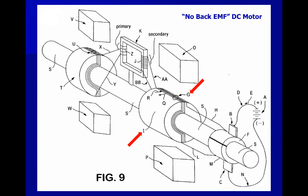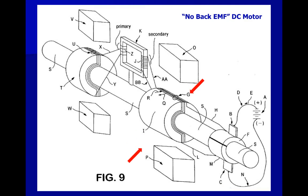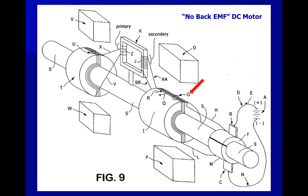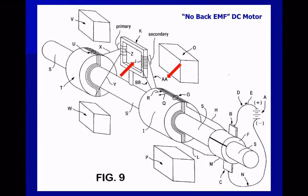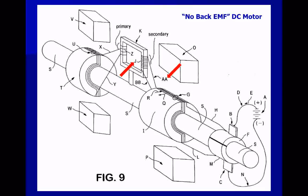The main armature winding G, which is wound on main armature core I, is an alpha turn winding where alpha is any integer greater than or equal to 1. One of these turns is electrically broken to create two terminals. One terminal is electrically connected to one end of conductor AA; the other end of conductor AA is electrically connected to one end of conductor J.